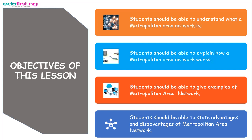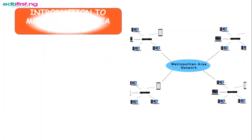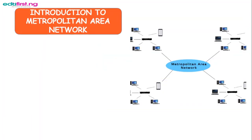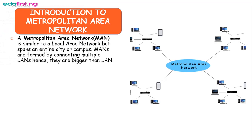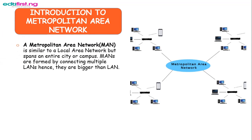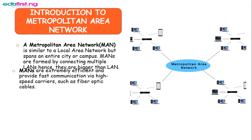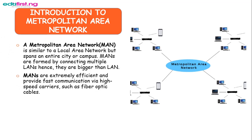Now let's get started with an introduction to metropolitan area network. A metropolitan area network, also known as MAN, is similar to a local area network but spans an entire city or campus. Metropolitan area networks are formed by connecting multiple LANs, hence they are bigger than a LAN. They connect so many LANs together to form a metropolitan area network.